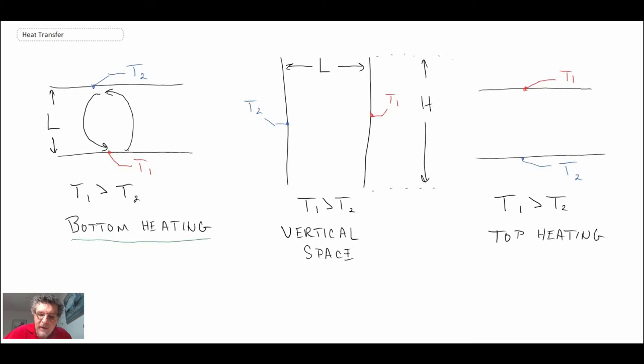Now looking at vertical space—this might be something like the cavity between windows or in the cavity of a wall of a house where you have studs and then drywall and plywood on the outside. The fluid on the right-hand side surface is going to heat up and move.